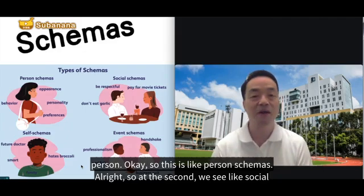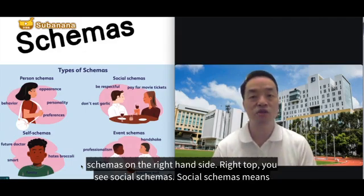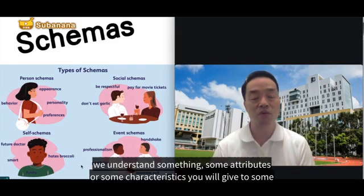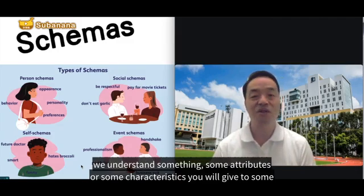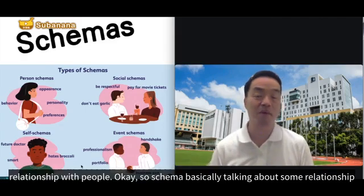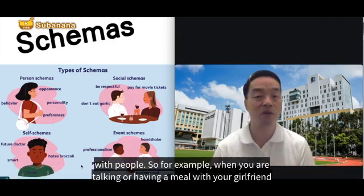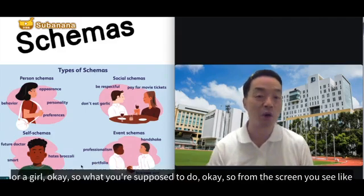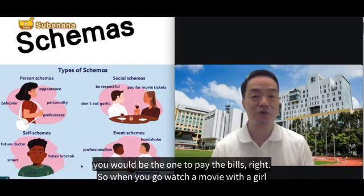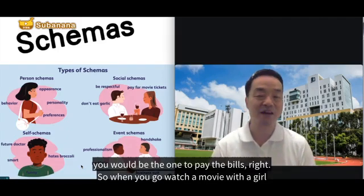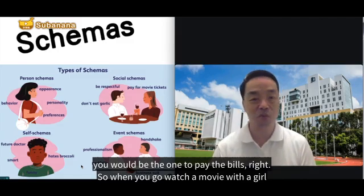The second type is social schemas, shown on the top right. Social schemas are about attributes or characteristics we assign based on relationships with people. For example, when you are having a meal with your girlfriend, you are expected to pay the bills. When you go to watch a movie with a girl, normally you are the one to buy the tickets.